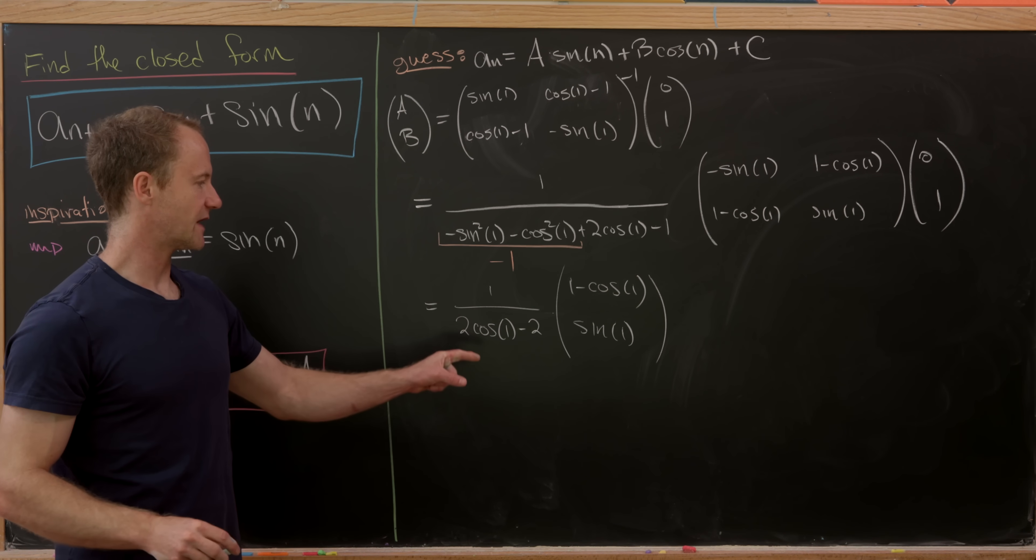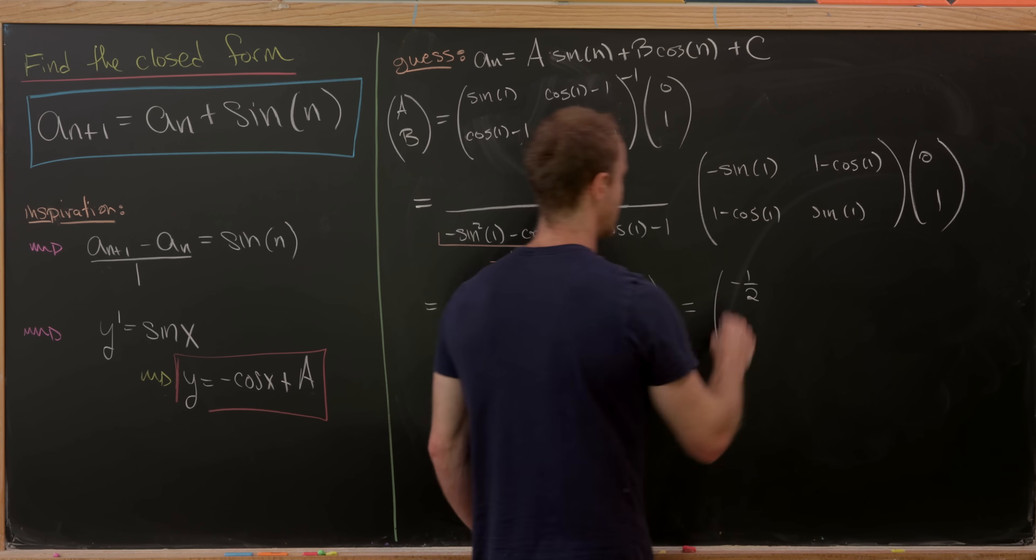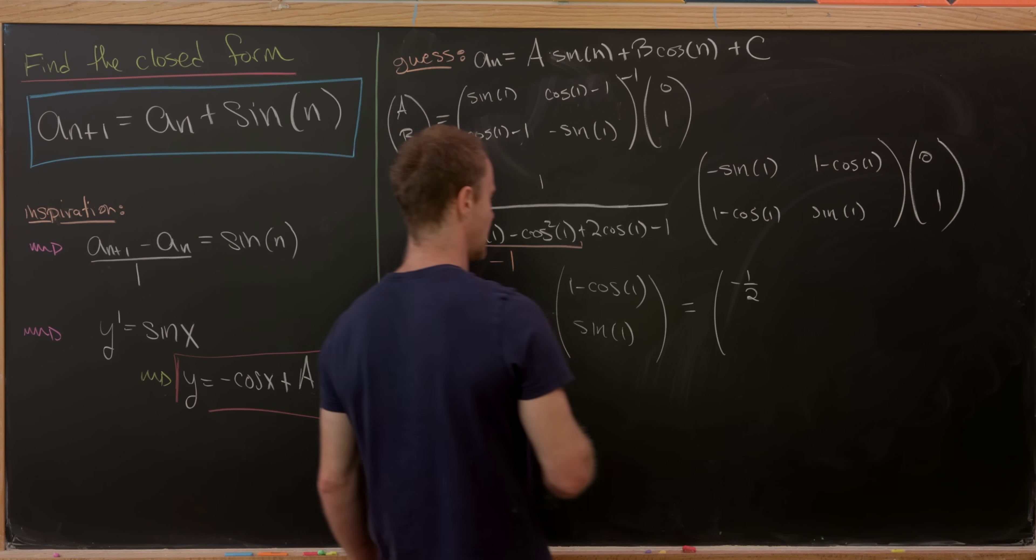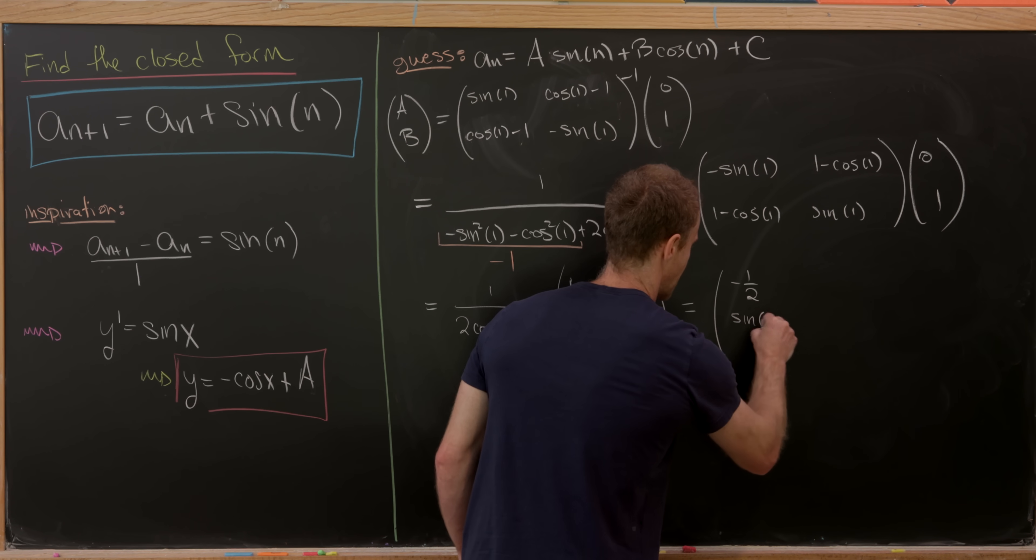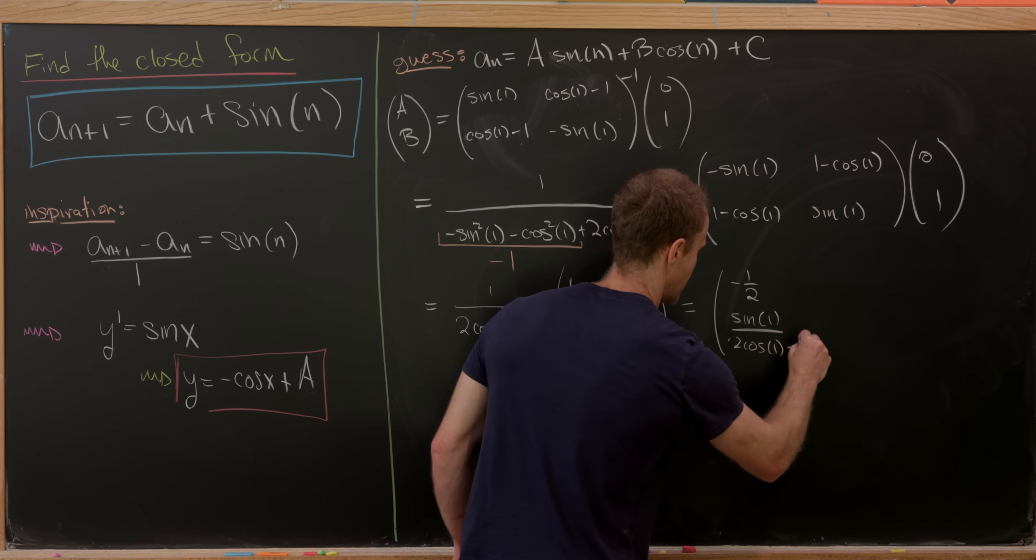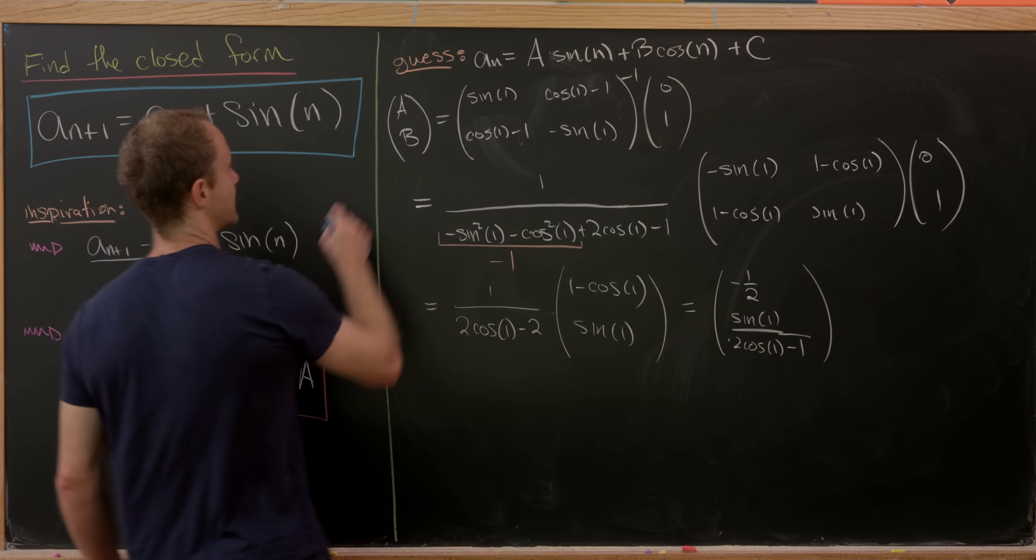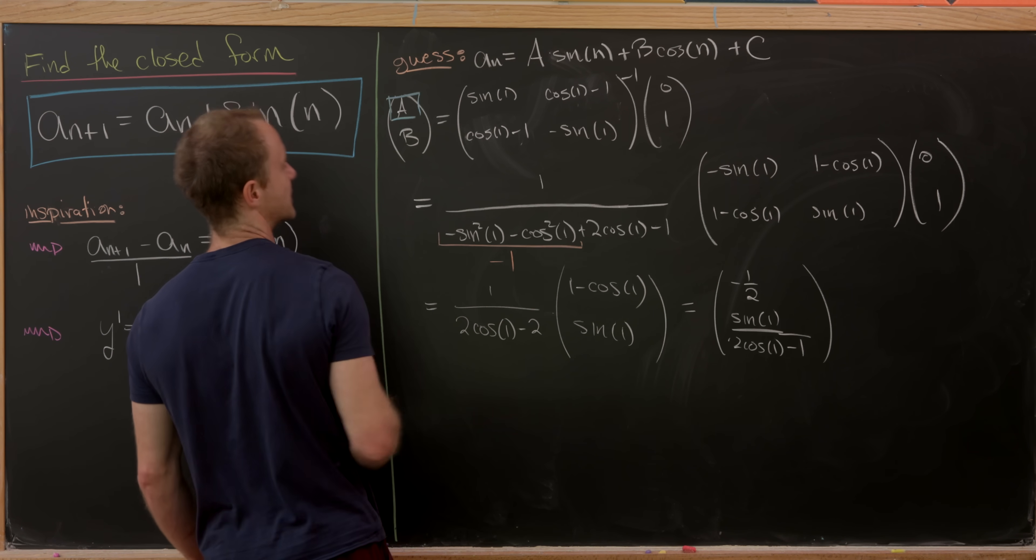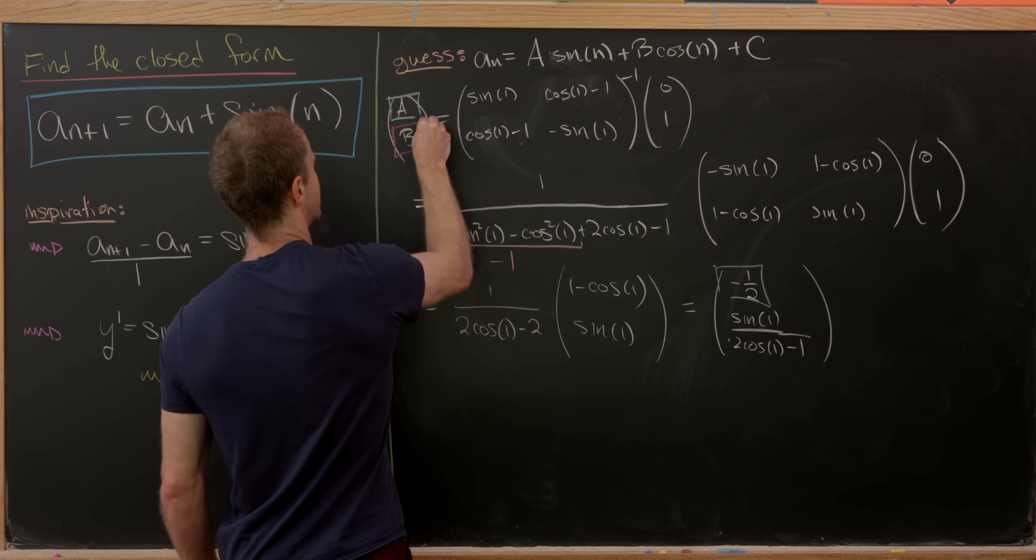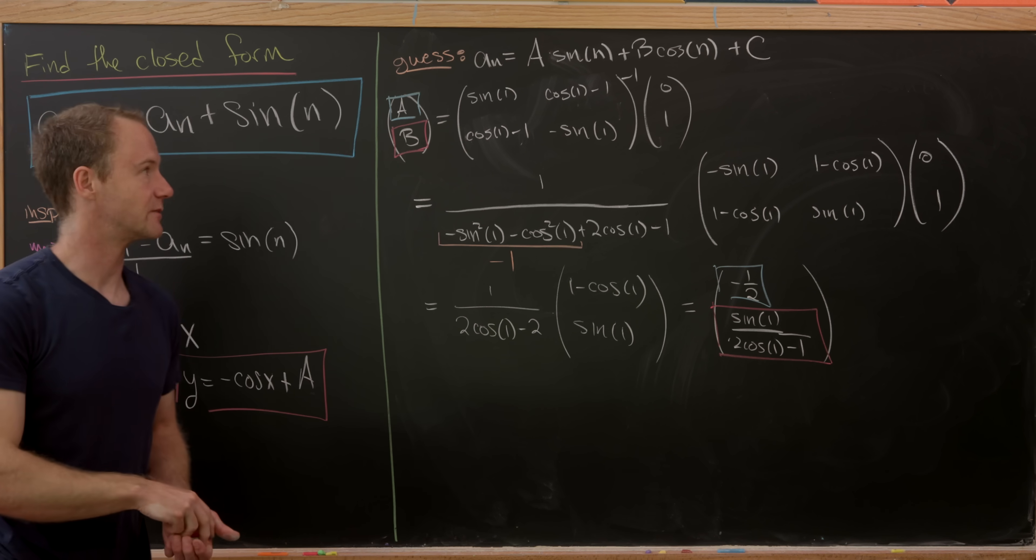But now multiplying that out, let's see, we get negative 1 half in the upper entry, because everything simplifies quite nicely. And then in the lower entry, we'll have sine of 1 over 2 cosine of 1 minus 1. And check it out. So that means our value of our coefficient a is simply minus half, whereas the value of our coefficient b is this kind of slightly more complicated object.